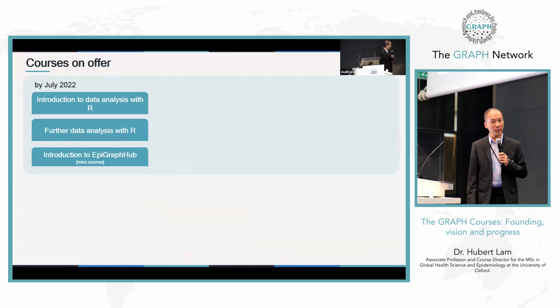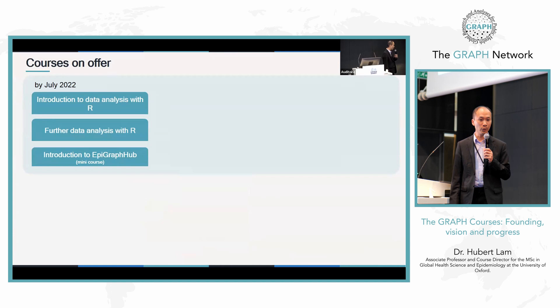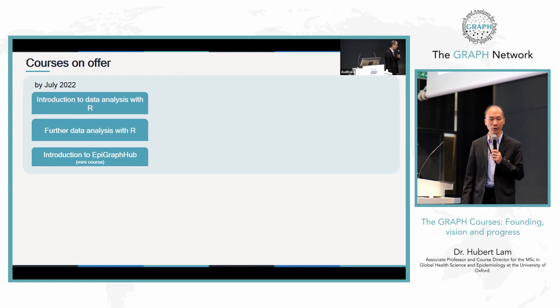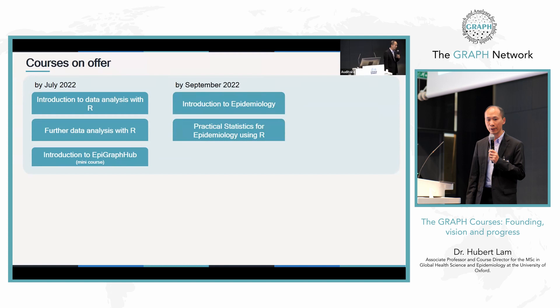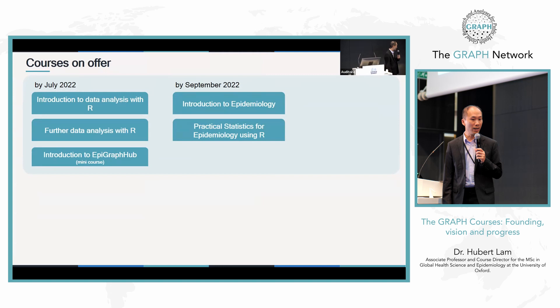Now I'll pass over to my colleague to tell you about what we'll actually be teaching on this platform. With seed funding from WHO HQ, we are developing three courses available by July 2022: introduction to R data analysis, further R data analysis, and introduction to the EpiGraph Hub. In September 2022, we'll have two additional courses focusing on epidemiology — introduction to epidemiology and practical statistics for epidemiology — funded by WHO and CDC Foundation.